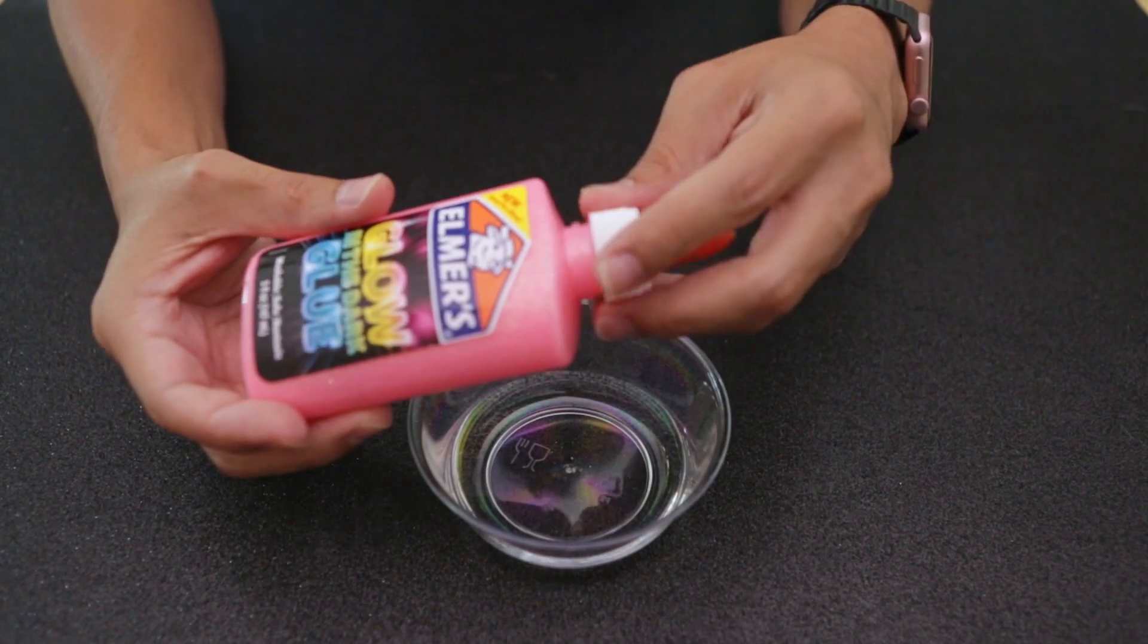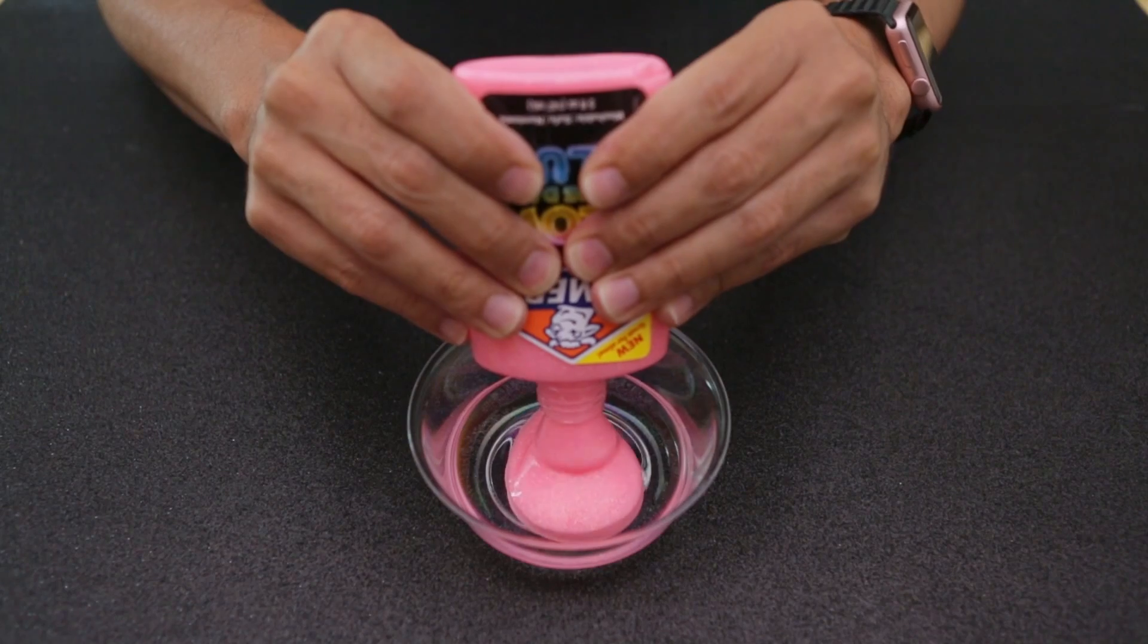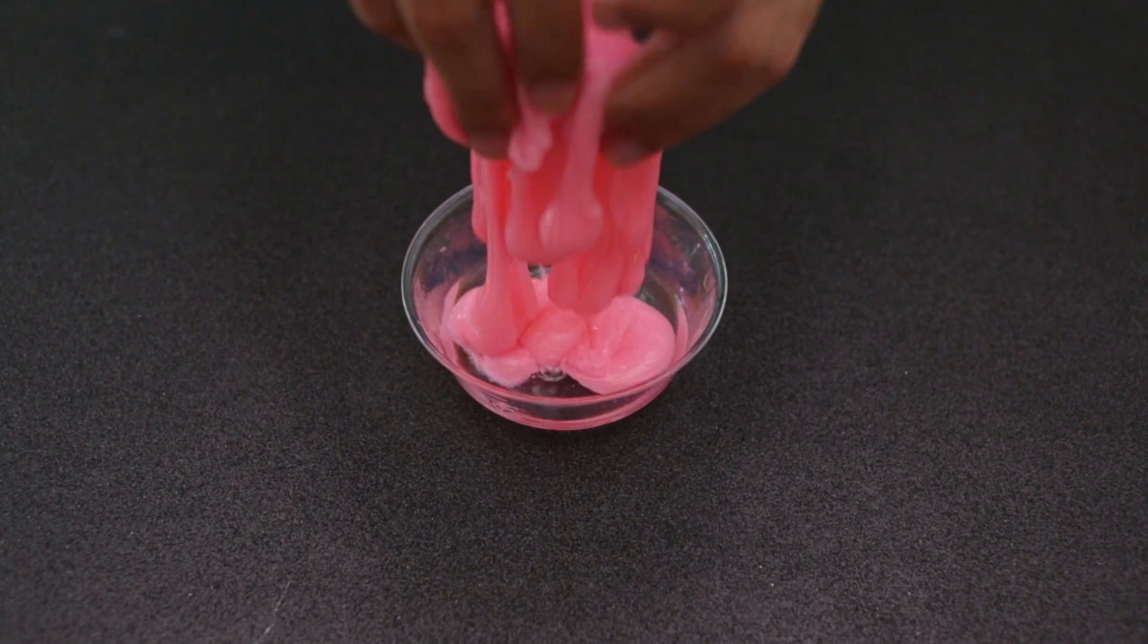Add your favorite color of Elmer's glue. Squeeze the bottle to get out all of the gooey contents. You'll want to thoroughly mix these ingredients together.